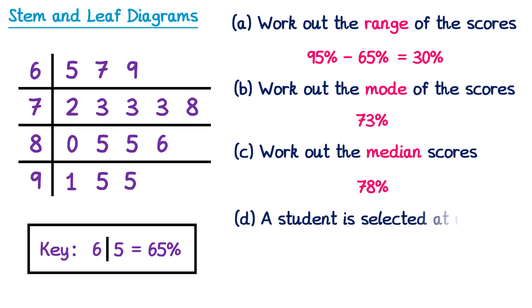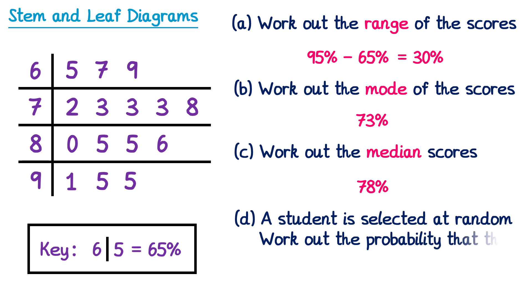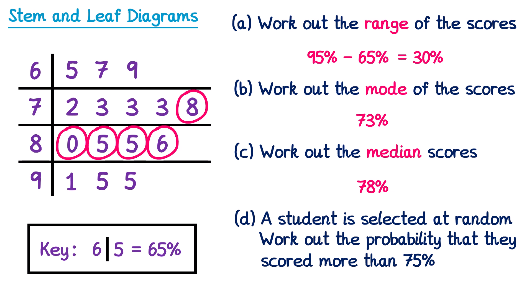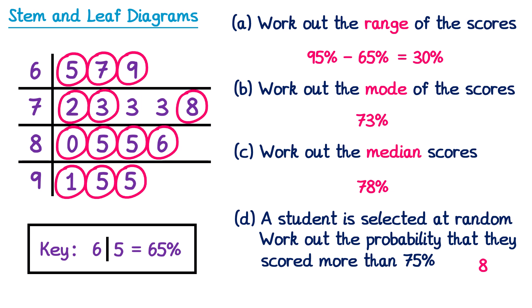A student is selected at random — work out the probability that they scored more than 75%. Looking at the 70s, only one person scored more than 75, the student who scored 78. All students in the 80s and 90s also scored more than 75. Counting all those leaves gives 8 students. To write this as a probability we need the total: counting all remaining leaves brings us to 15 students total. So the probability is 8 out of 15.